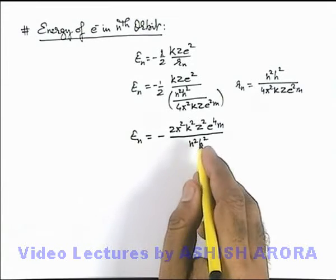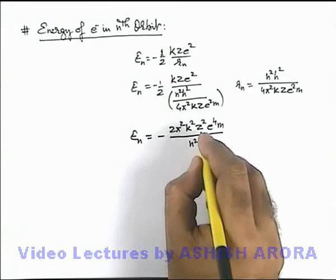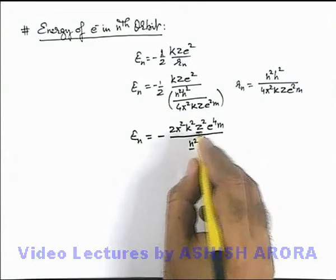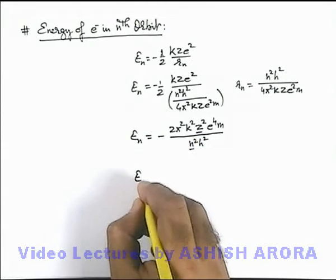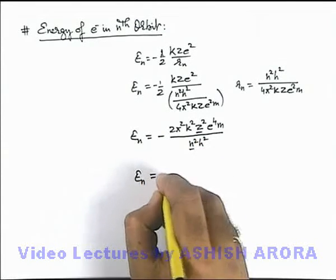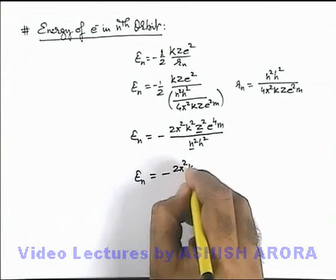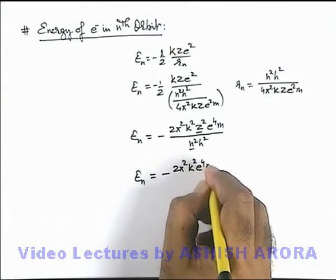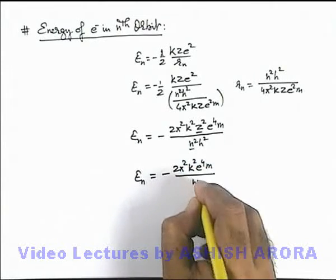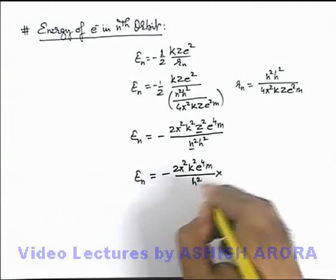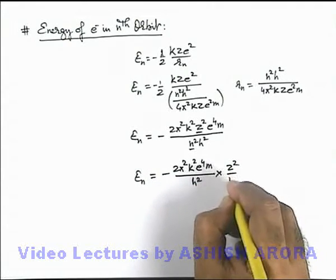Here in this term I can also separate the constant terms as for various atoms, hydrogenic atoms and various orbits it may vary. So here it'll be minus 2 pi square k square e^4 m by h square multiplied by z square over n square.